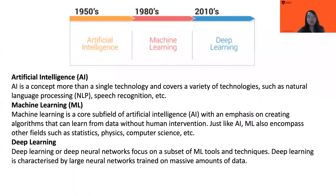Before this, I want to first introduce three terms: artificial intelligence, machine learning, and deep learning. Someone will ask, what's the difference between these three terms? Actually, artificial intelligence is a broad concept — more than a single technique. It covers a lot of techniques such as natural language processing, speech recognition, and computer vision.